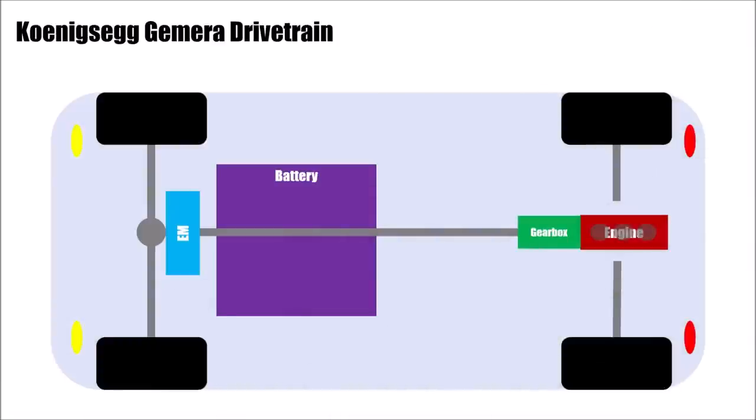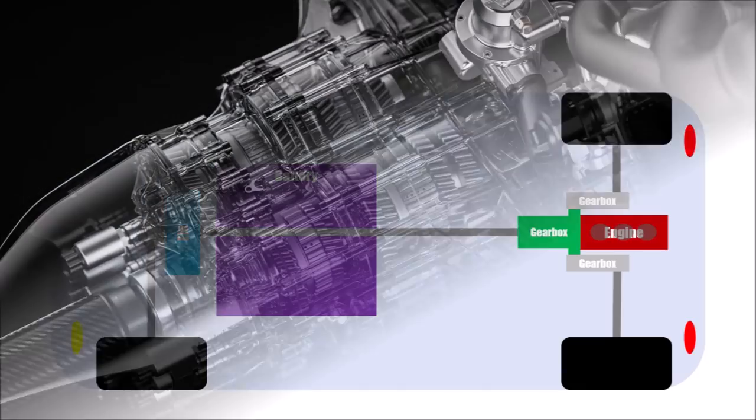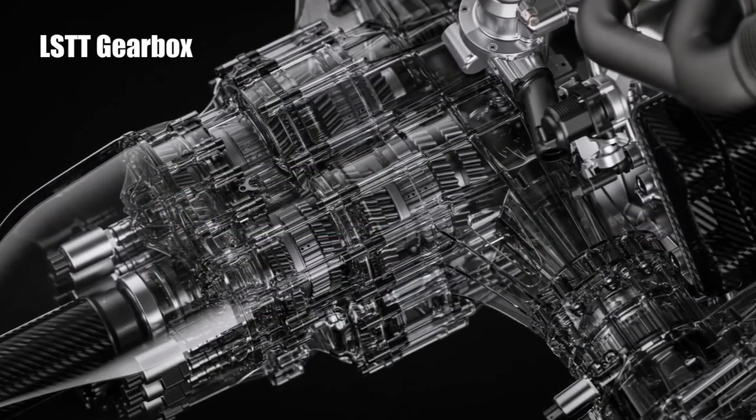But the problem was now that all this power was only on the front axle and they needed to somehow drive the rear wheels without changing the overall concept of the car. They already used the slim gearboxes along the sides of the combustion engine before to connect it to the electric motors. They now used the idea, extended these gearboxes and connected them to the gearbox. Koenigsegg calls that tourbillion. So now LSTT.